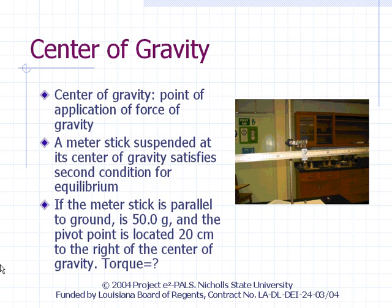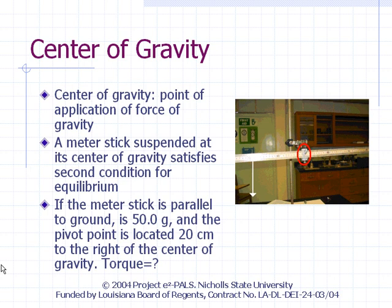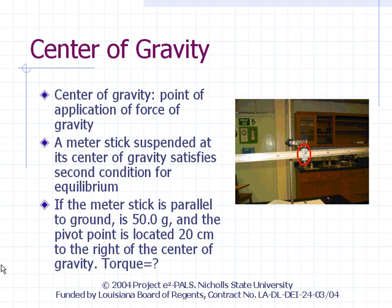The concept of center of gravity is important in solving problems dealing with torques and rotation. Whenever we need to consider the force of gravity, we assume that it is applied at one point, which we refer to as the center of gravity of the object. If the center of gravity is to the right of the pivot point, there will be a net torque that will make the stick rotate clockwise. If it is to the left of the pivot point, there will be a net torque causing counterclockwise rotation. If the pivot point is exactly at the center of gravity, there is no net torque, and the meter stick will be perfectly parallel to the ground and in equilibrium.